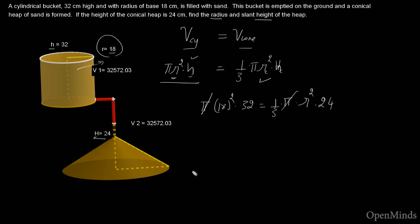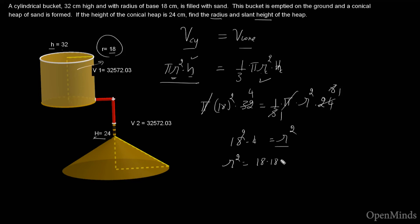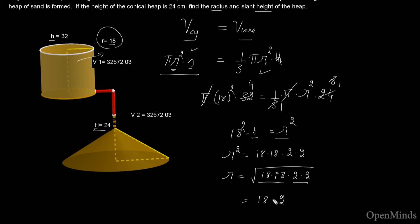We can cancel π from both sides. Simplifying: 3 cancels with 3, and 32 divided by 8 gives 4 — so we get 18² × 4 = r². Writing 4 as 2 × 2, we have r² = 18 × 18 × 2 × 2. Taking the square root, r = 18 × 2 = 36.